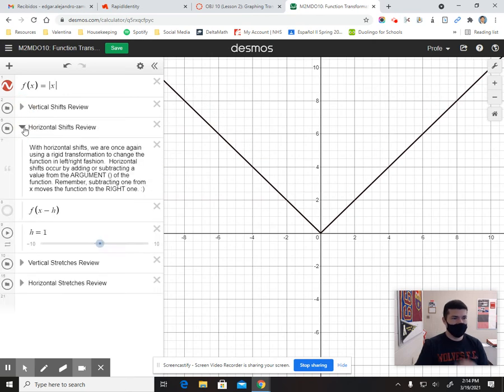Then we have horizontal shifts. The horizontal shifts happen inside of the argument of the function. So they affect the x. And it's natural, anything horizontal is going to change the argument, the x, the input. So here I go.